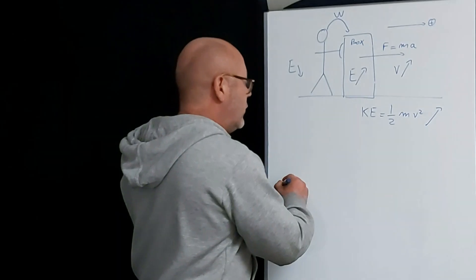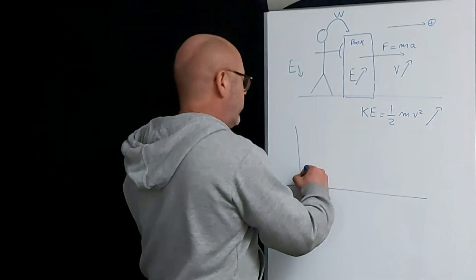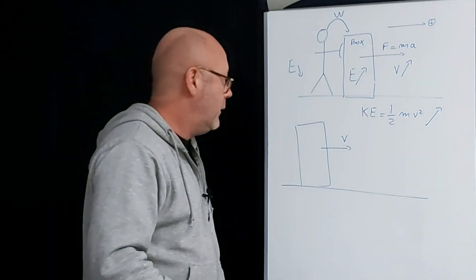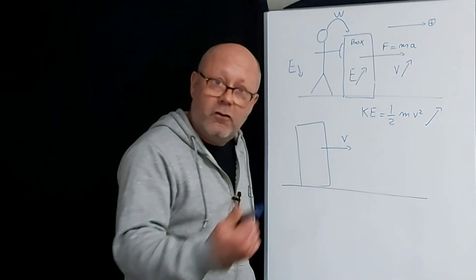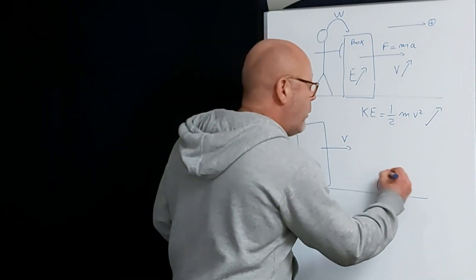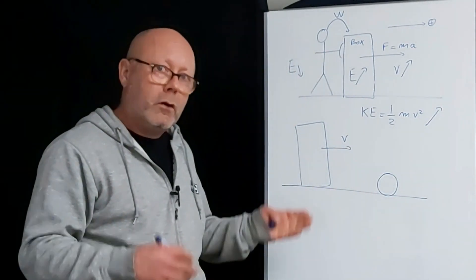Now let's consider the box after the guy pushed. So now the box got a constant velocity. It has energy, because it's moving. And on the path of the box, there's a ball. What do you think will happen?